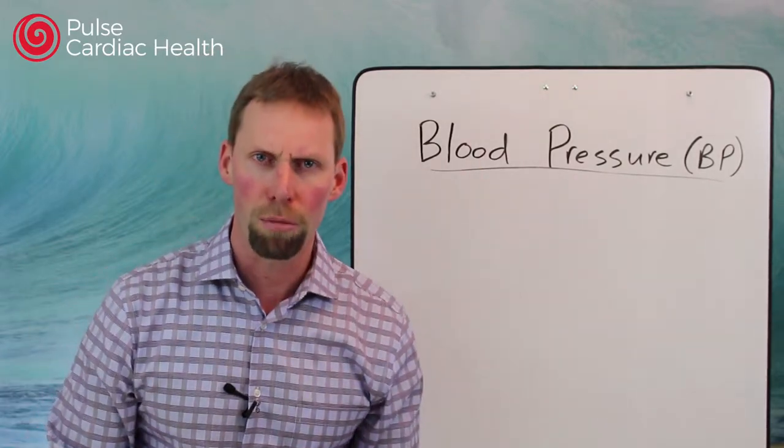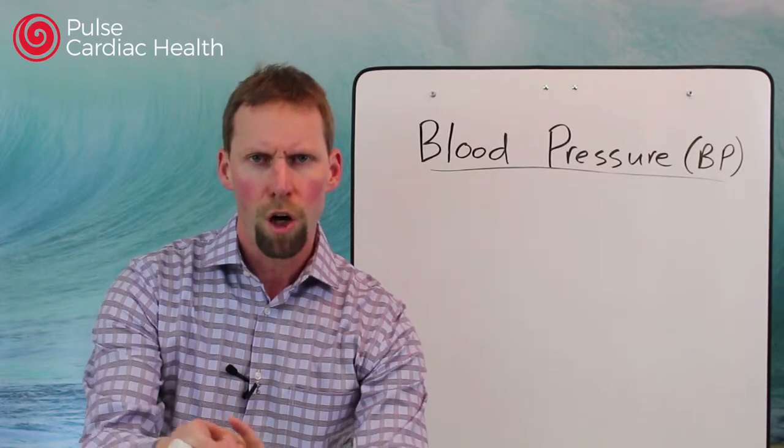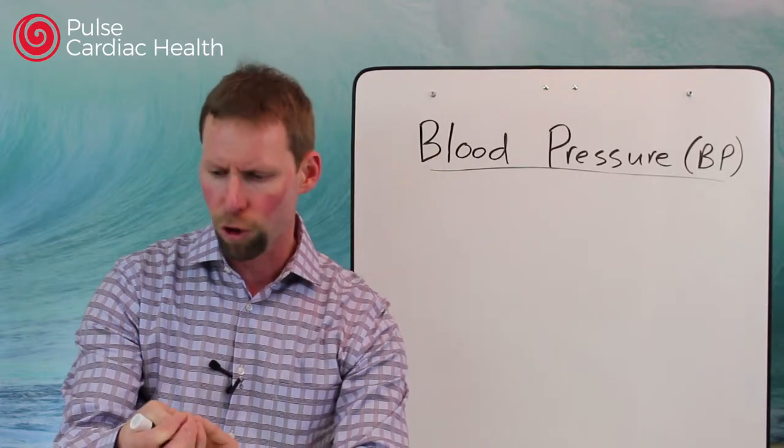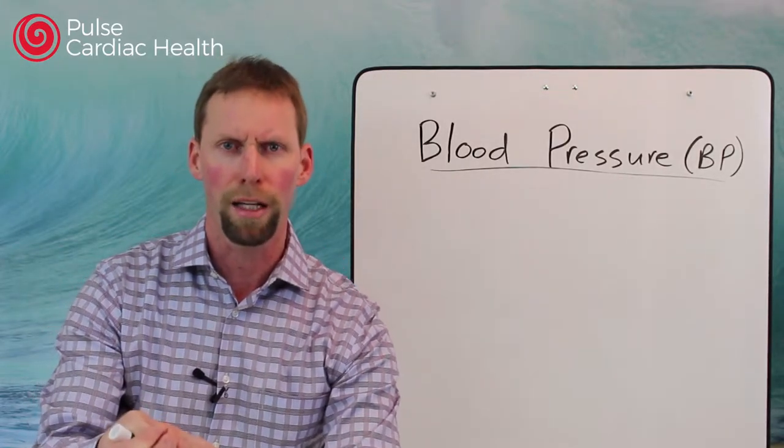The top number is called your systolic blood pressure. Now if you feel your pulse, when you feel that little bump go past your fingers, that's your systolic blood pressure, the high number.